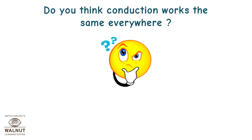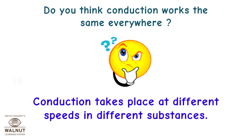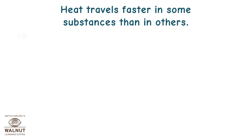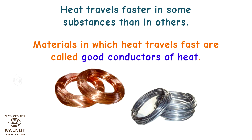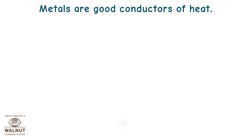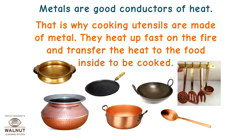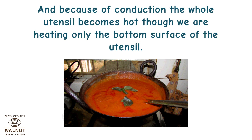Do you think conduction works the same everywhere? Conduction takes place at different speeds in different substances. Heat travels faster in some substances than in others. Materials in which heat travels fast are called good conductors of heat. Metals are good conductors of heat. That is why cooking utensils are made of metal — they heat up fast on the fire and transfer the heat to the food inside. Because of conduction, the whole utensil becomes hot even though we are heating only the bottom surface.